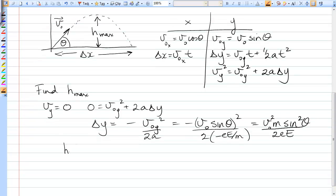So H max is V0 squared M sin squared theta over 2e big E. That's part one.